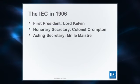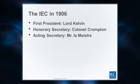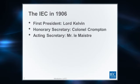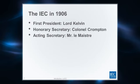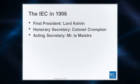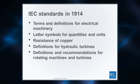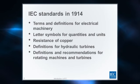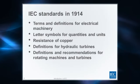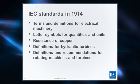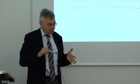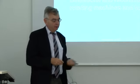When the IEC started off, its first president was Lord Kelvin — the man whose name is used in measuring temperature today. The secretary was Colonel Crompton, and the acting secretary was Mr. Le Maître. By the time we got ten years on, at the beginning of the First World War, these were the standards that had been published and agreed at that time, driven initially by terms and definitions for electrical machinery.